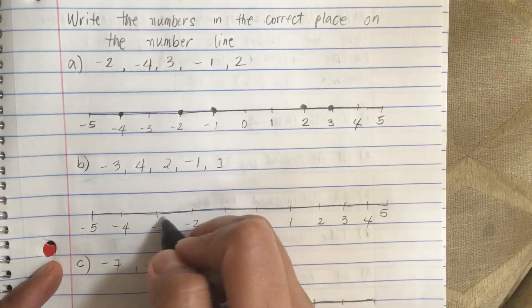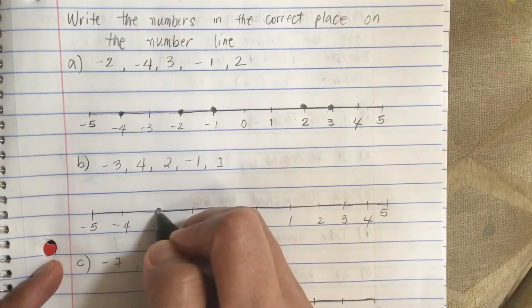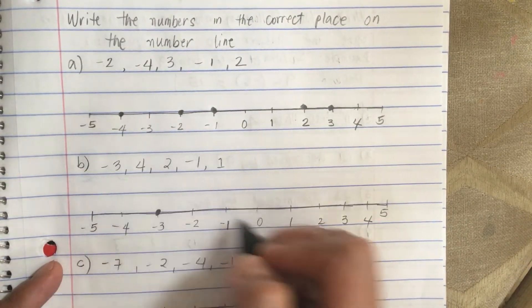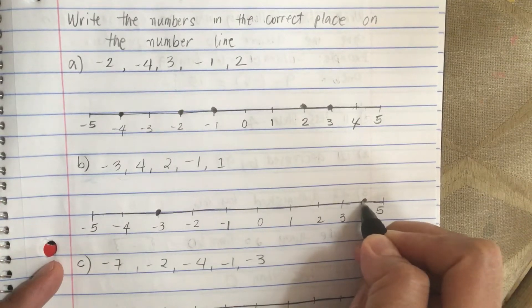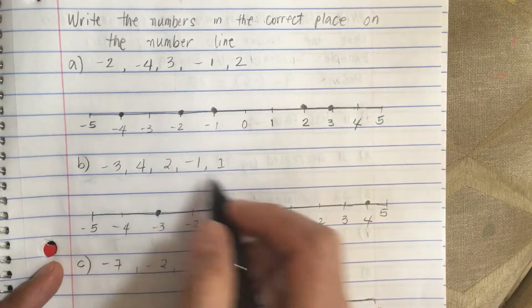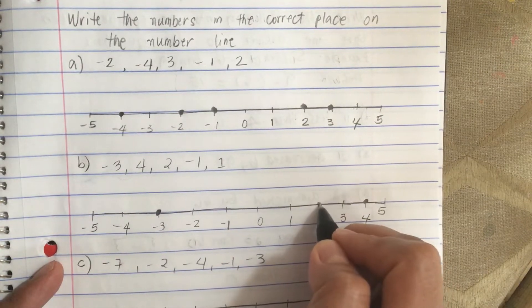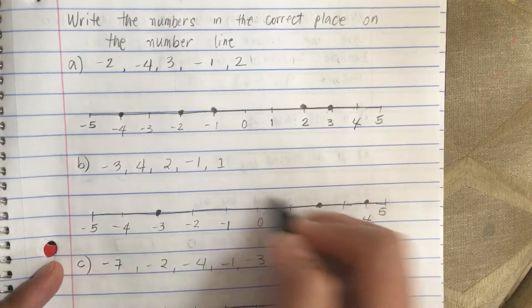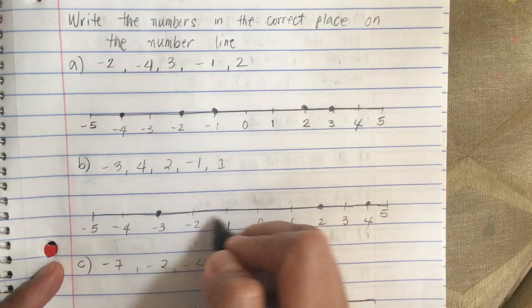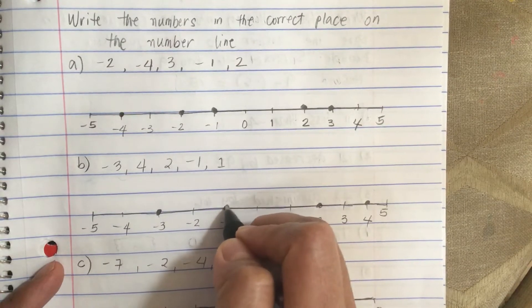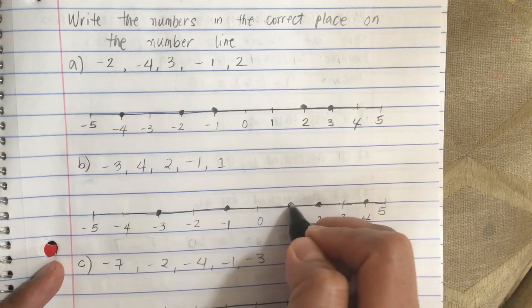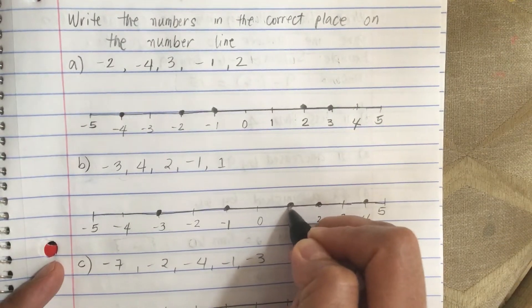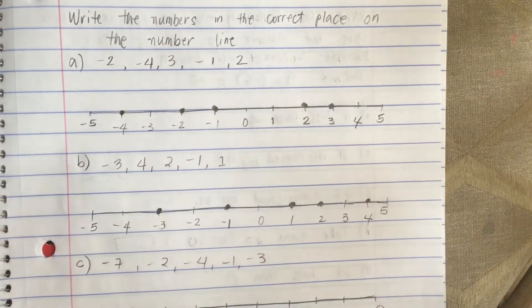So we have minus 3, right here. And a 4, right here. And a 2. And then minus 1. And then 1. So we did them all.